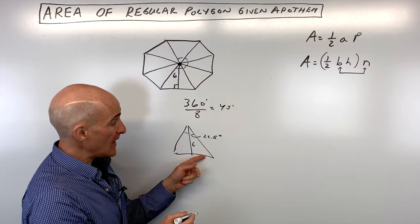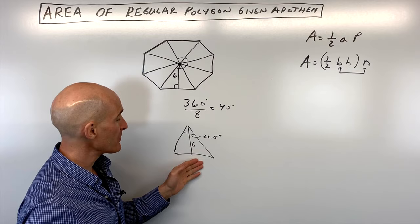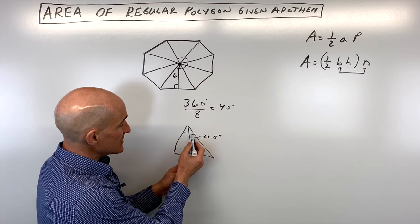So what we want to do now is find the length of the side. But once we find it, we're going to have to double it since this apothem is splitting it into two pieces, into half. So what we're going to do is recognize that this is a right angle.